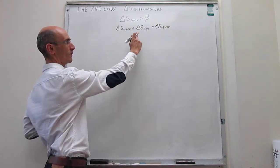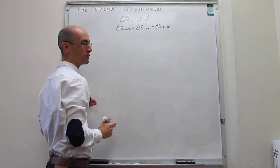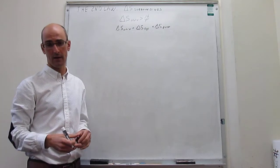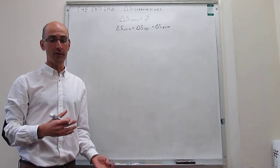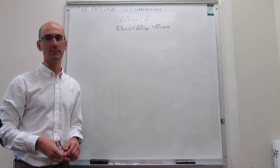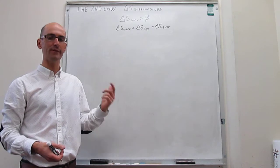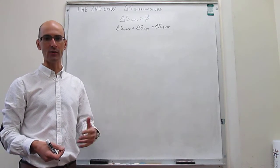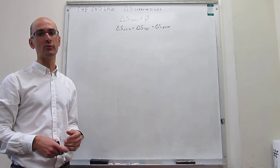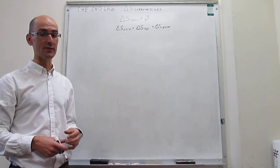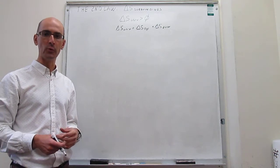If we know how to calculate the change in entropy in the system and in the surroundings, then we will be able to make predictions about any particular process. So far we have learned how to calculate the change in entropy in the system for things like a gas expansion, a phase transition, or a heating and cooling process. But we still do not know how to calculate the change in entropy in the surroundings — that's what we are going to learn right now, and then we will do a numerical example.